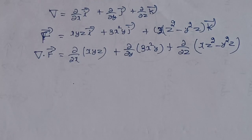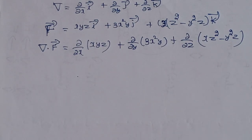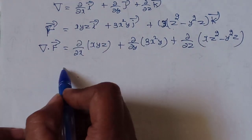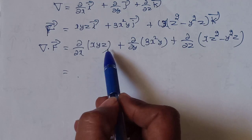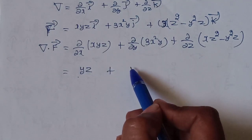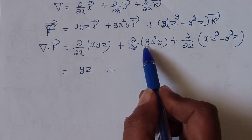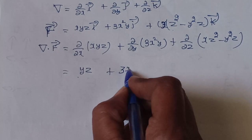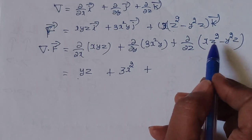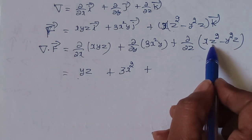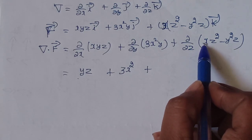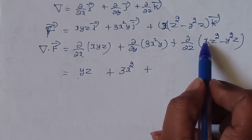Now we take partial derivatives. Differentiating xyz with respect to x — y and z are constant, so the result is yz. Then differentiating 3x²y with respect to y — x and z are constant, so 3x² is constant and y differentiates to 1, giving 3x². Then differentiating the k-component 2x²z minus y²z with respect to z — x and y are constant, so z differentiates: x times 2z gives 2xz.